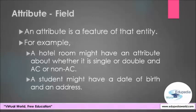The next concept we are learning is attribute, which we can also call a field. An attribute is a feature of the entity we identified earlier. For example, a hotel room might have an attribute about whether it is a single or double room, and whether it is AC or non-AC. In the student entity, the student might have a date of birth and an address. An entity is stored as a table in a database and an attribute becomes a field in that table.